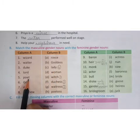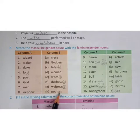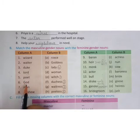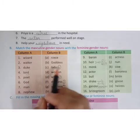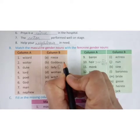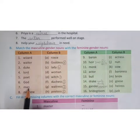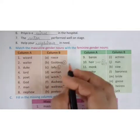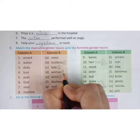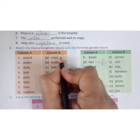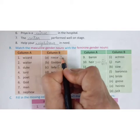Poet means kavi. The feminine gender of poet is poetess. This is the fifth answer. God's feminine is goddess, the sixth answer. Man's feminine is woman, the seventh answer. Nephew's feminine is niece, the eighth answer.